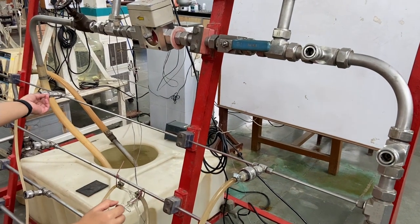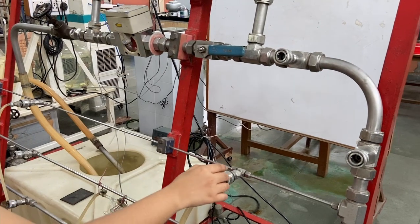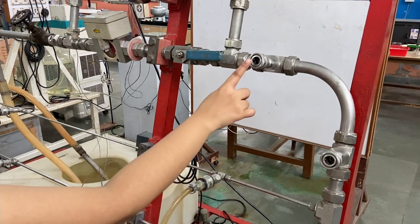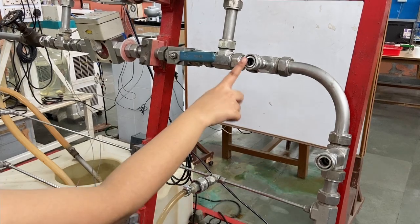For straight pipes, we have seen the two pressure taps earlier. For bends also, we have two pressure taps before and after the bend.